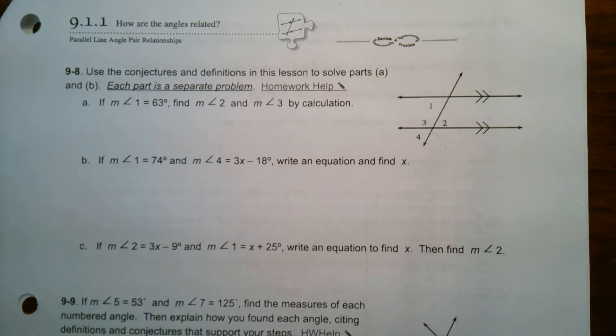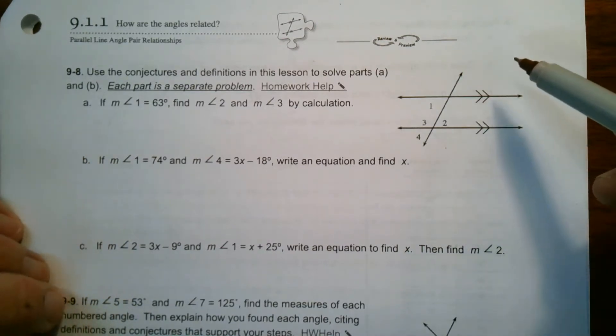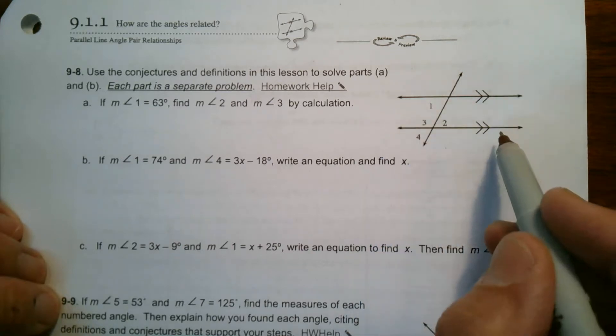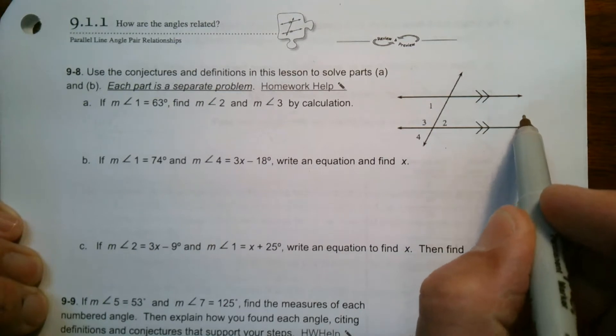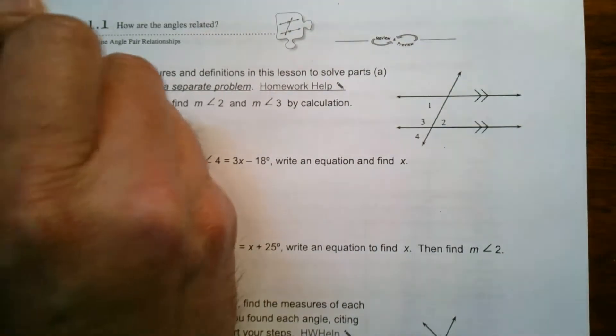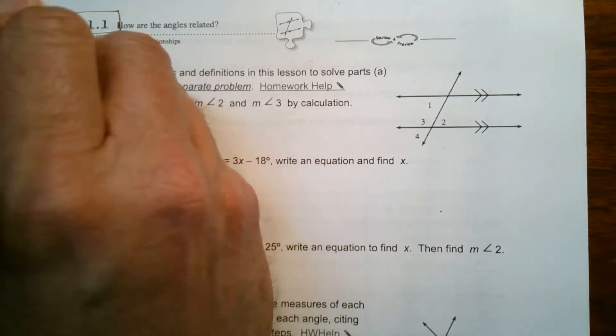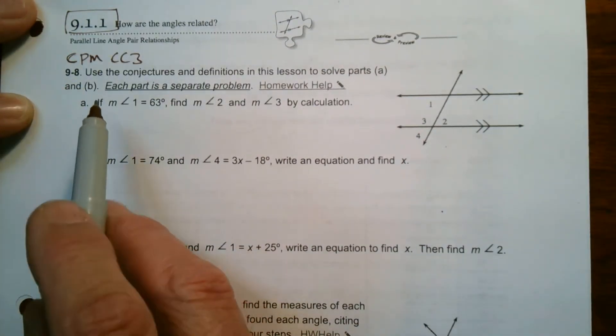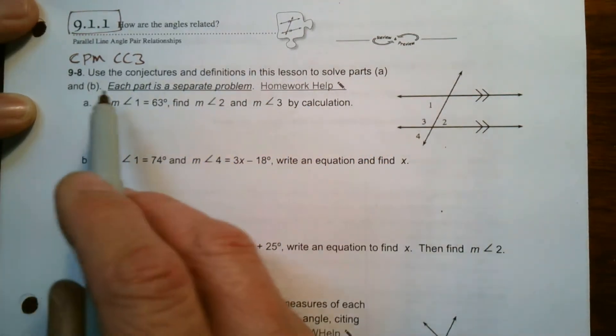Hey folks, Mr. Dell here. We are looking at a problem that has to do with angles that are created by two parallel lines cut by a transversal. We have two parallel lines and they're cut by a transversal. This is something I'm taking from CPM Course Three, section 9.1.1, number 9-8. It says use the conjectures and definitions in this lesson to solve parts A and B.